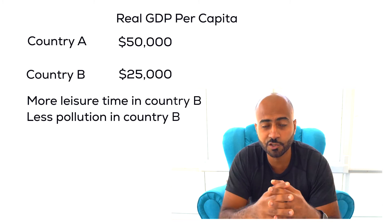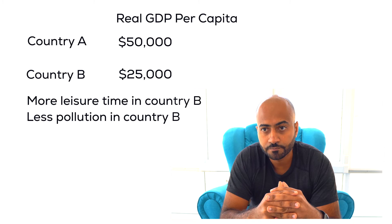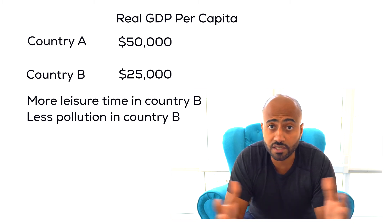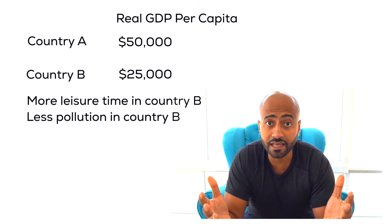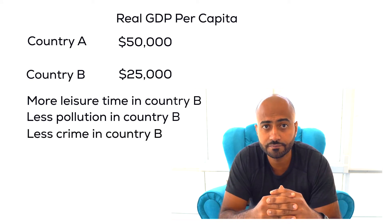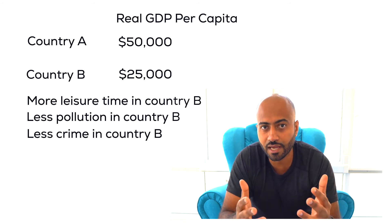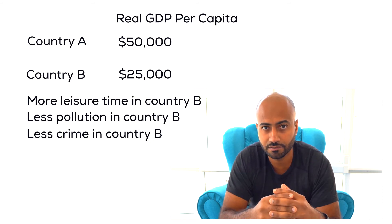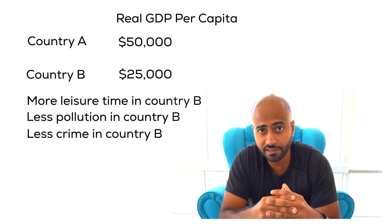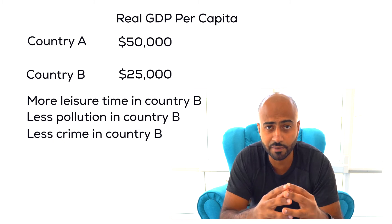How about this situation: Country B is completely safe with no crime at all, whereas in Country A if you were to leave the house you'd get shot. Real GDP does not take crime into consideration. Do you still want all the money in Country A, but with the pollution, the crime, and the environmental concerns?